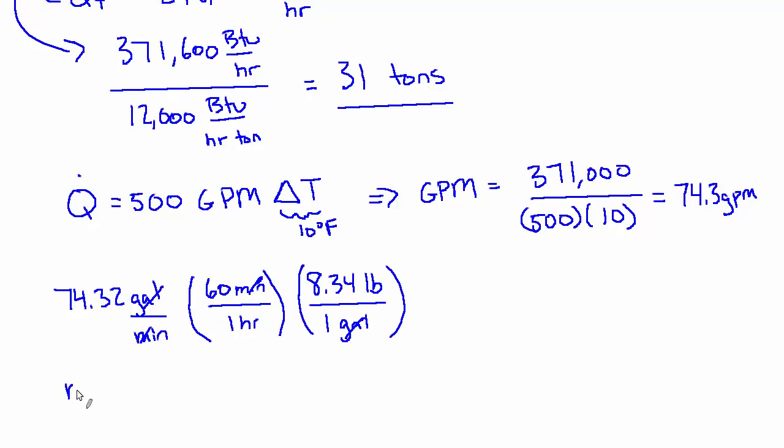And let's give ourselves a variable here. We'll call this M dot mass flow rate of chilled water equals 37,200 pounds per hour. And that is the last answer we need.